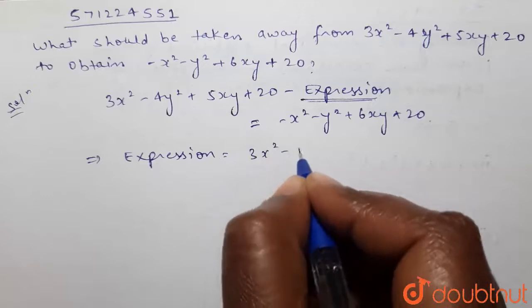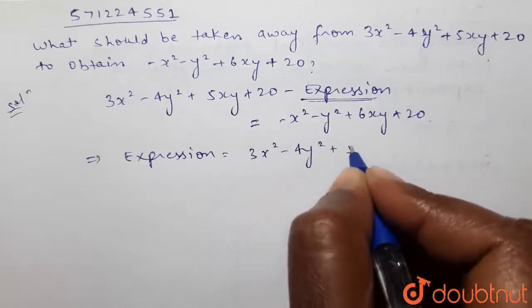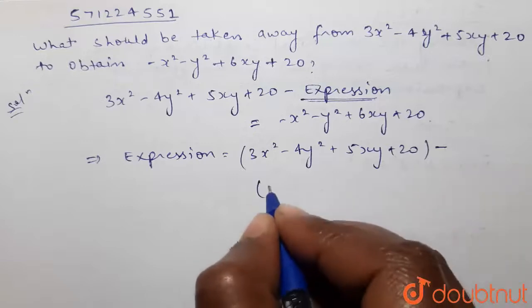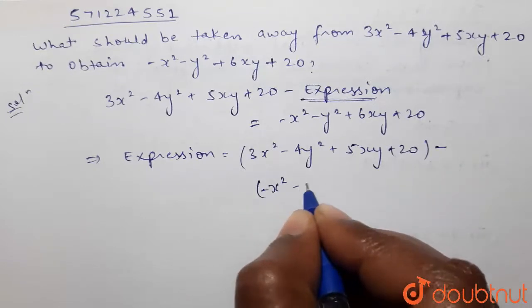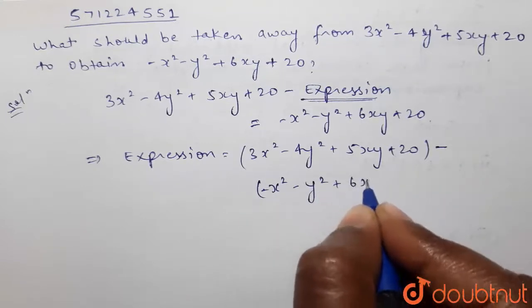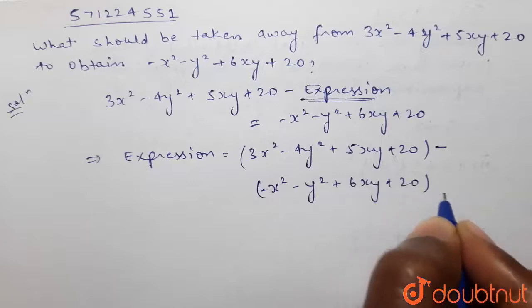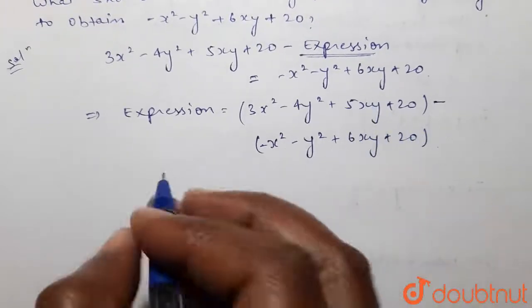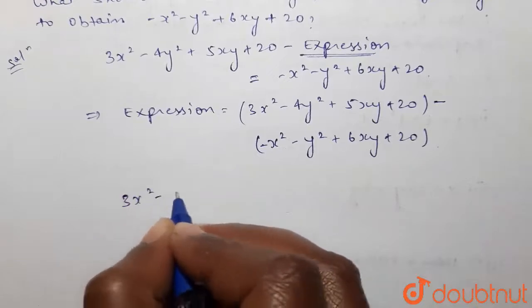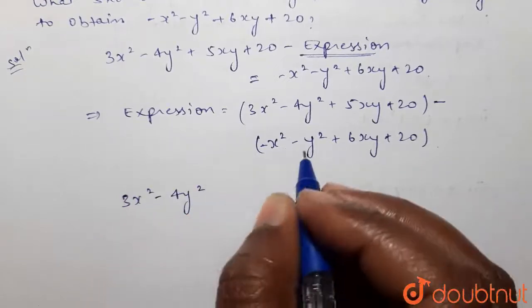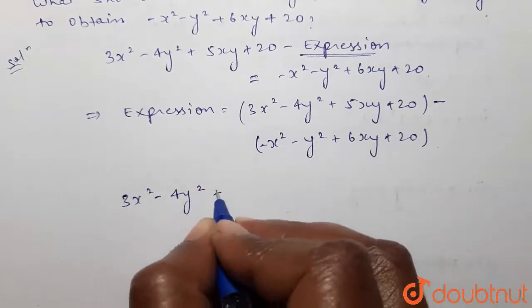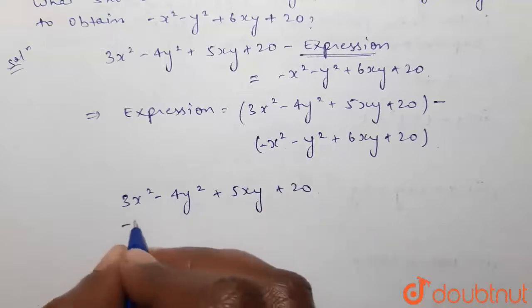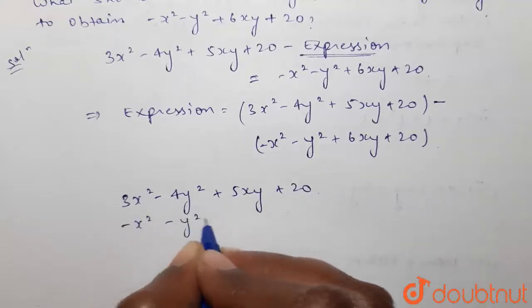So the expression equals 3x² minus 4y² plus 5xy plus 20, minus (minus x² minus y² plus 6xy plus 20). We have to subtract these two expressions, and for finding the value we will write like terms below like terms.